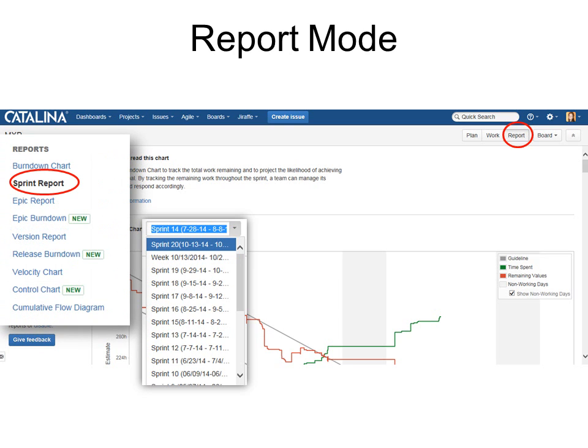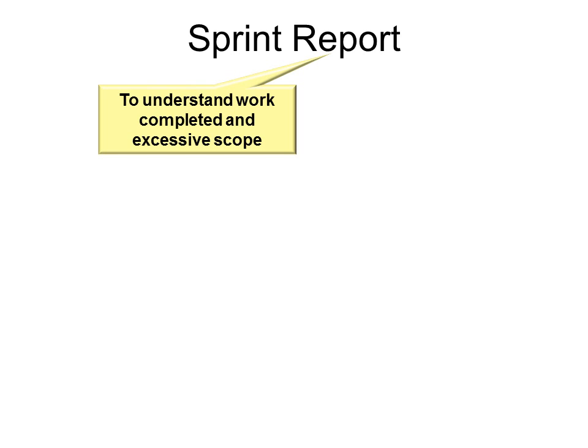Next, we'd go to the Sprint Report. A sprint report is to understand work completed and excessive scope.